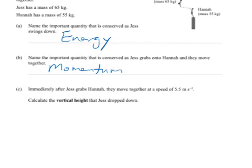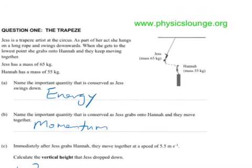Immediately after Jess grabs Hannah, they move together at a speed of 5.5 meters per second. This is a bit tricky. We have to calculate the vertical height that Jess dropped down, so h equals question mark. To calculate this, I'll just go to the diagram here.